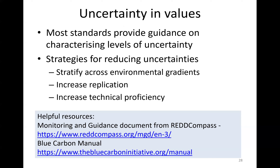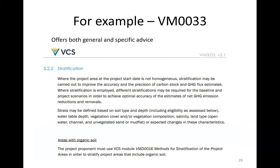There are some really helpful resources available. The Red Compass has a great description of uncertainty and how to deal with it. The Blue Carbon Manual from the Blue Carbon Initiative also has some really great advice. In VM0033, there are general instructions on how and why to stratify your sampling design and some very specific advice — for example, where the project area at the project start date is not homogeneous, stratification may be carried out to improve the accuracy and precision of carbon stock and greenhouse gas flux estimates.